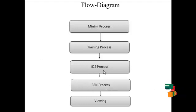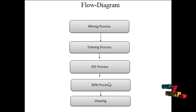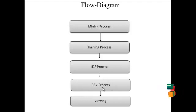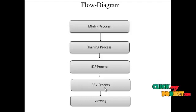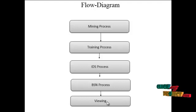Next is the BSN process. After the IDS process is completed, the processed data is passed into the BSN process. The BSN process shows which types of attacks are detected and which are non-attack data. All data — attacks and non-attacks — including malware information is displayed in the BSN process. Finally, the viewing process allows the user to view all of the processed results. The final output is produced, and both attack and non-attack data can be displayed.